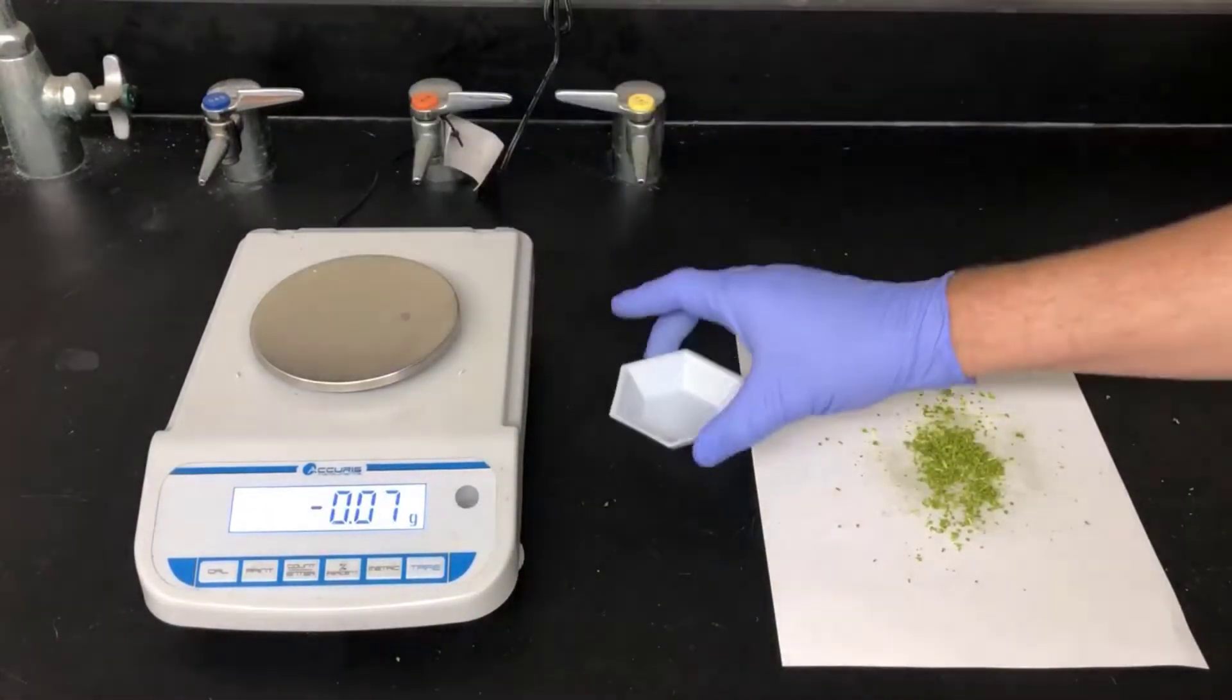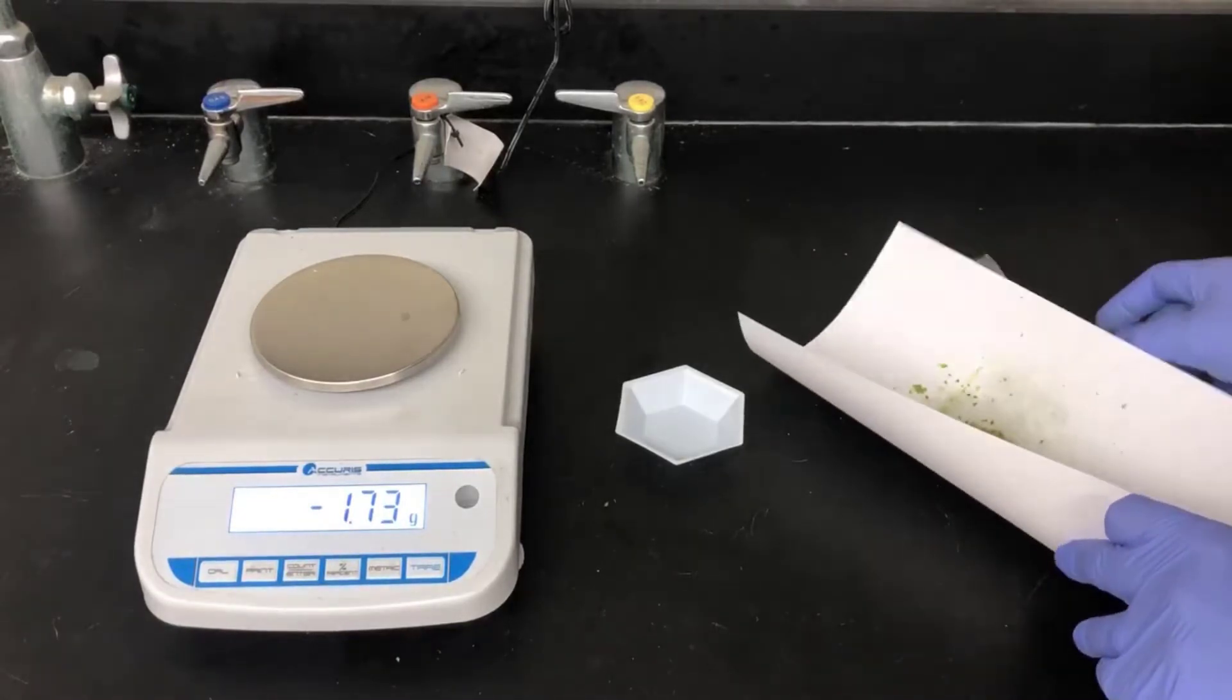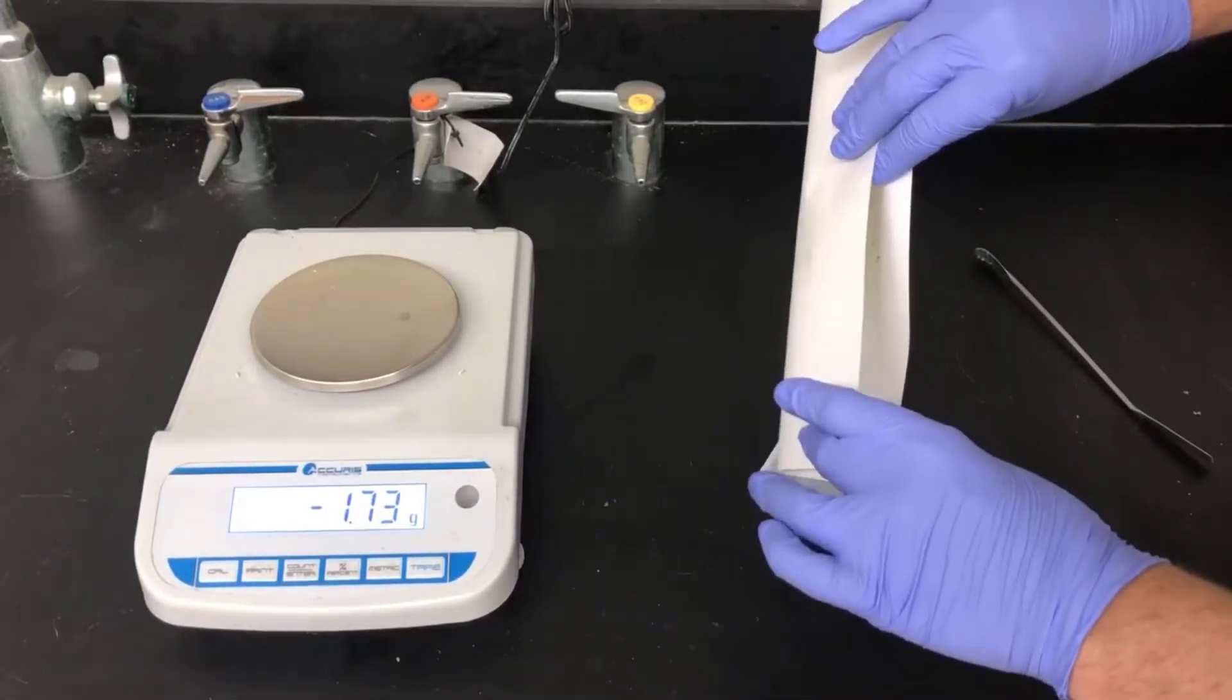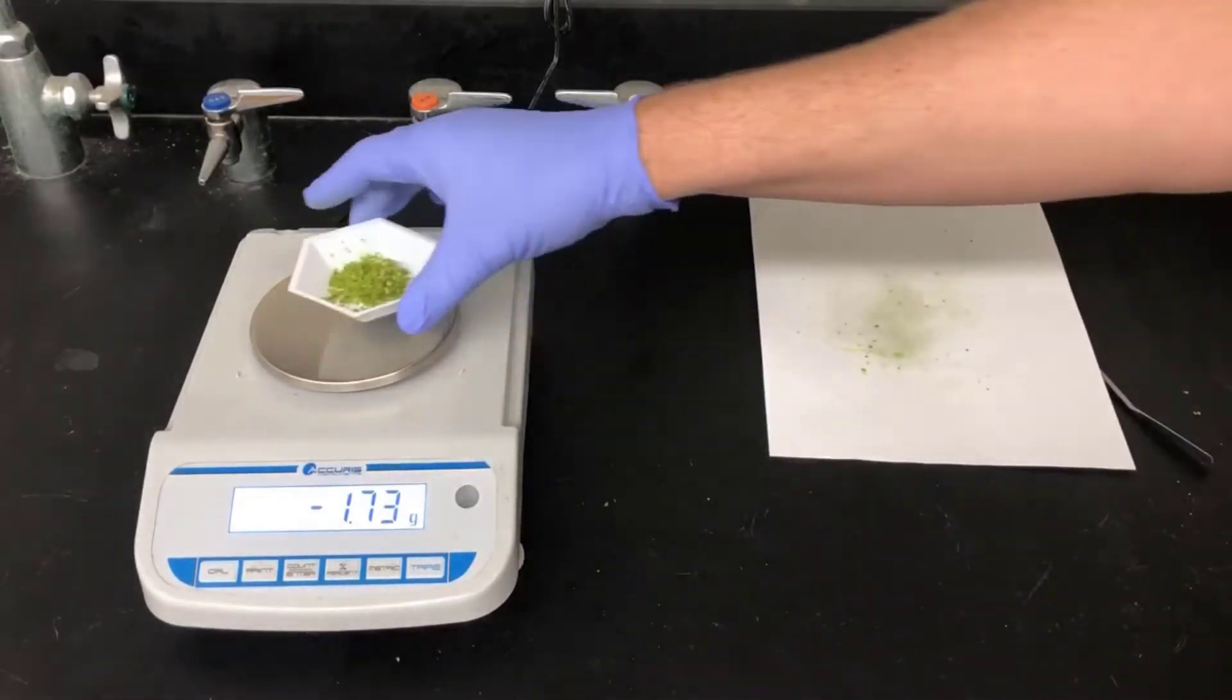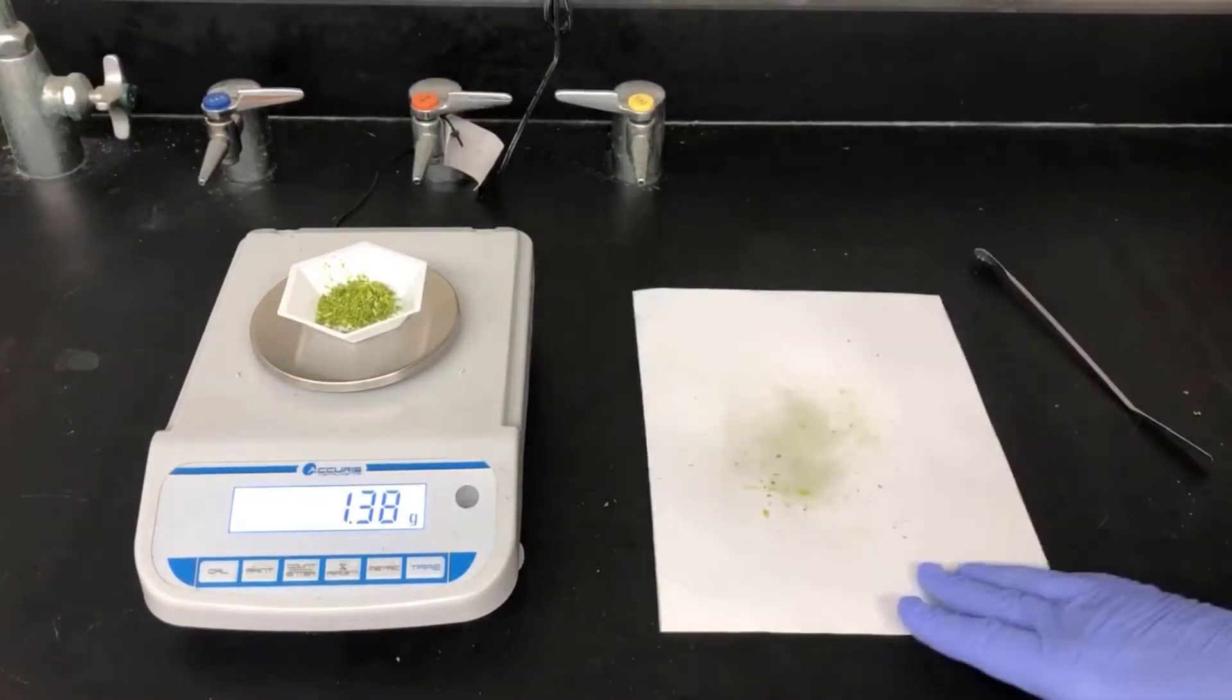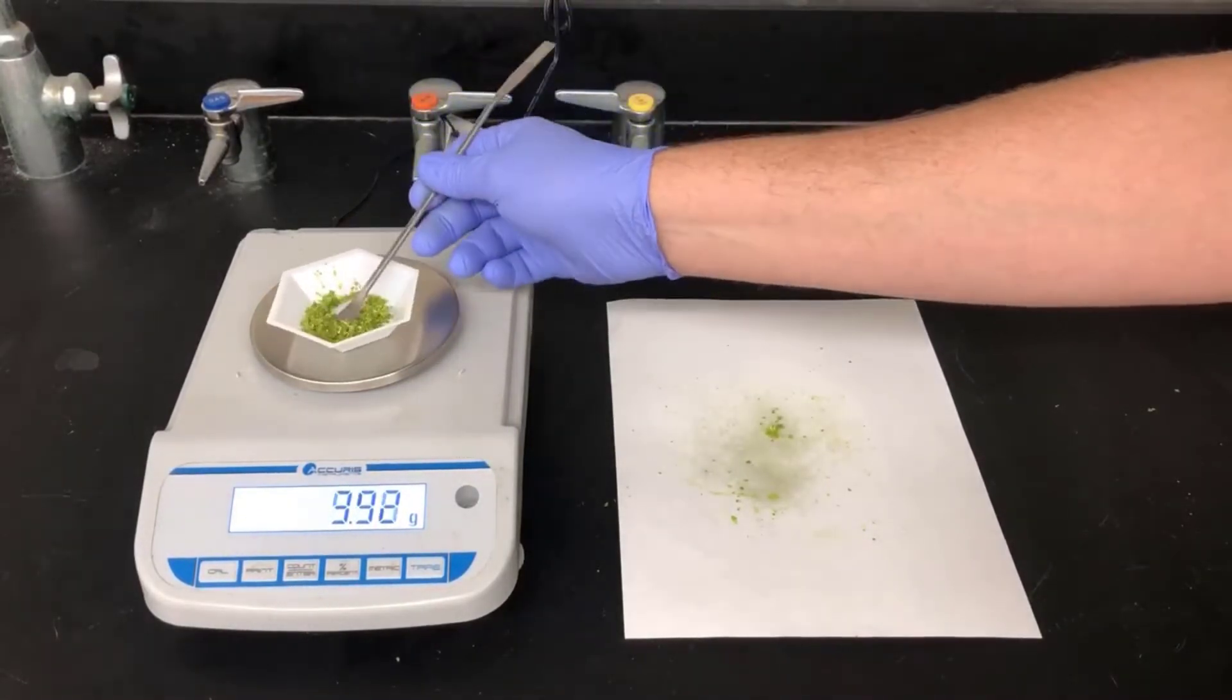I'm using a disposable weighing boat here to weigh out the lime zest. I'm curling up the paper here to funnel it into the weighing boat. The lime zest is a little bit sticky so you might have to use your spatula here. And I've grated out 1.38 grams of zest. This is a little more than I need and I'm going to remove some here so I can get closer to 1 gram.